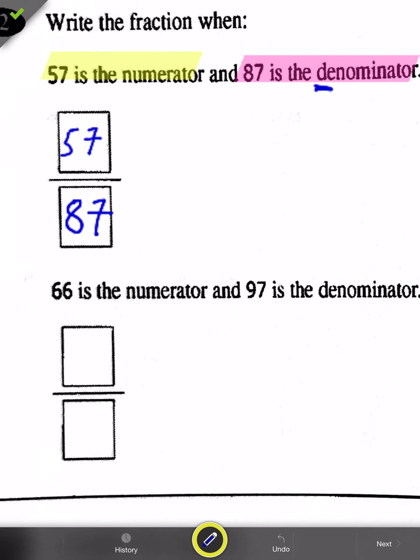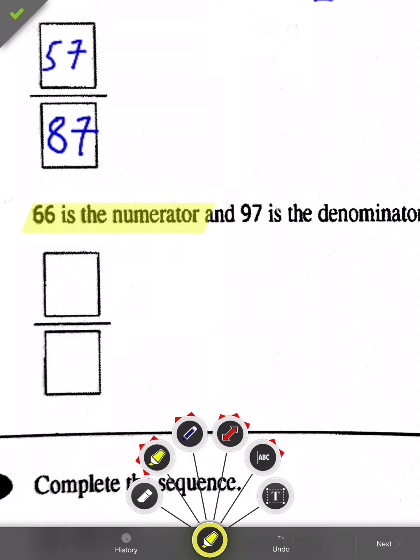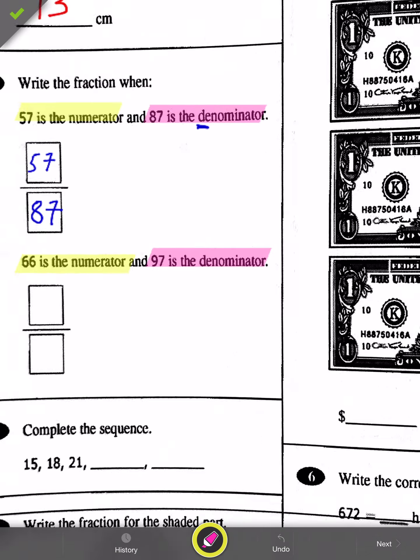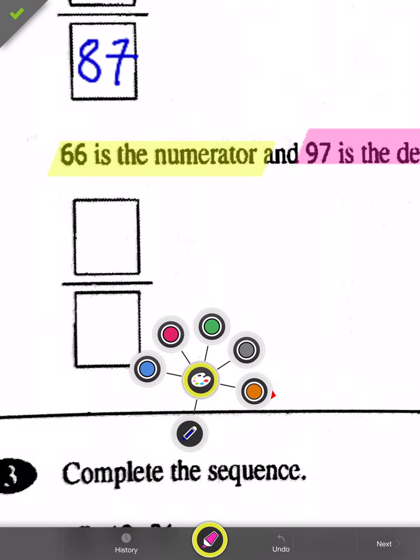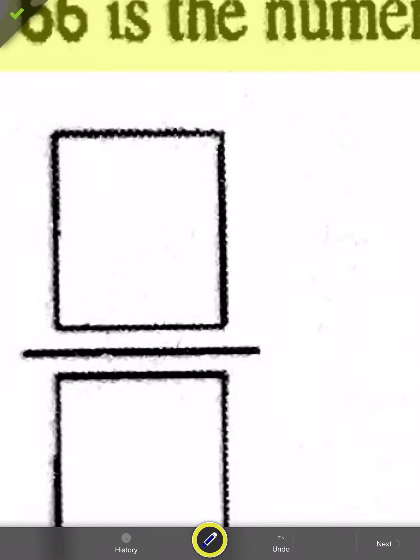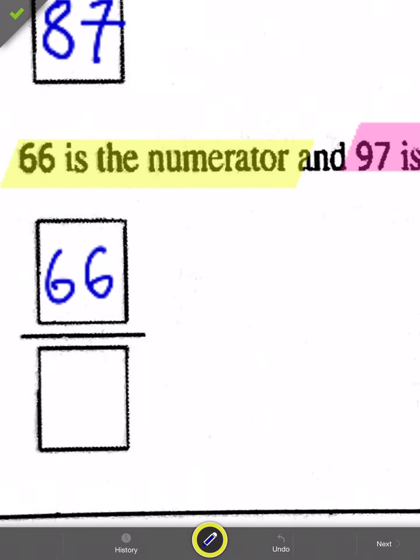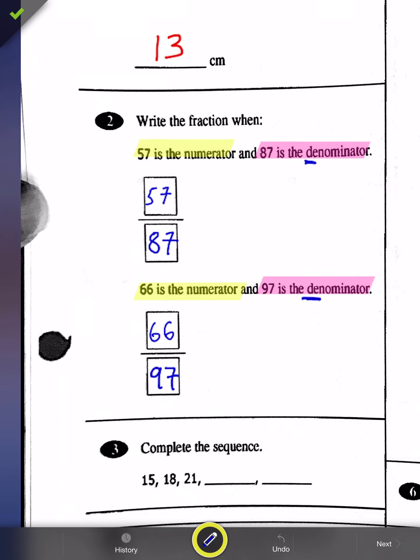Alright, we'll do the second part of number two together as well, and it reads: 66 is the numerator and 97 is the denominator. So we'll go ahead and put that in there. 66 is my numerator, the number up top, and denominator, D in denominator for the down number, is going to be 97.